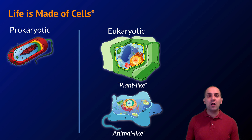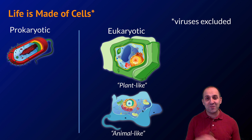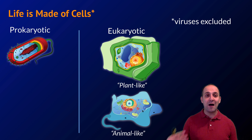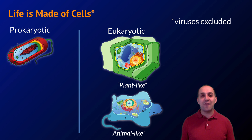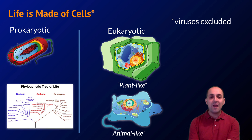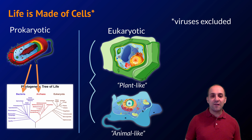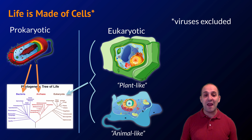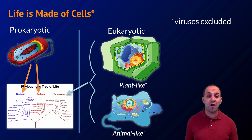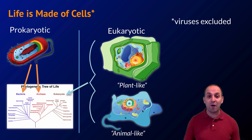The first piece of evidence is the fact that all of life is made out of cells. For this discussion, I am not including viruses — viruses are not made out of cells, and most people don't consider them to be alive either. When we look at the cells on the planet right now, there are two major types: prokaryotic cells and eukaryotic cells. Prokaryotic cells comprise two of the three major domains of life — the bacteria and the archaea. Eukaryotic cells comprise one of those three domains, the eukarya, with eukaryotes being further broken down into plant-like and animal-like cells. We should focus on the universality of cells as powerful evidence for the common ancestry of all living things.